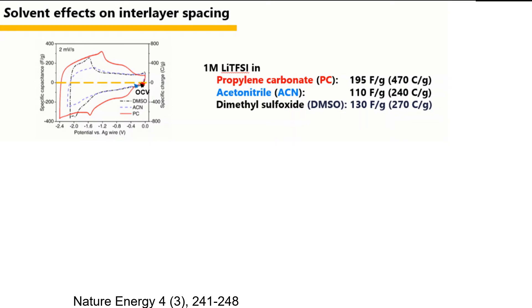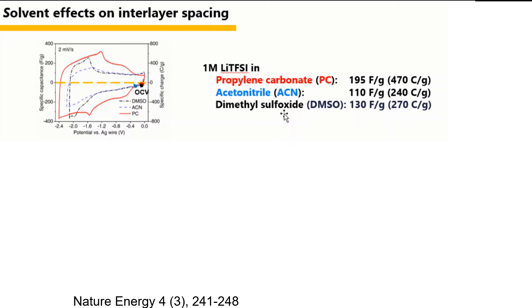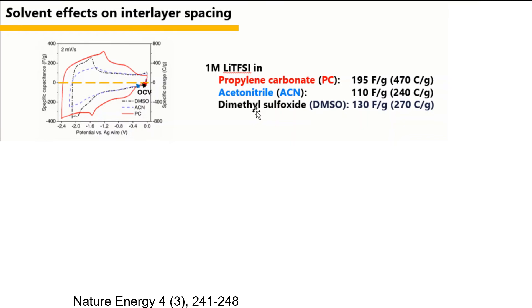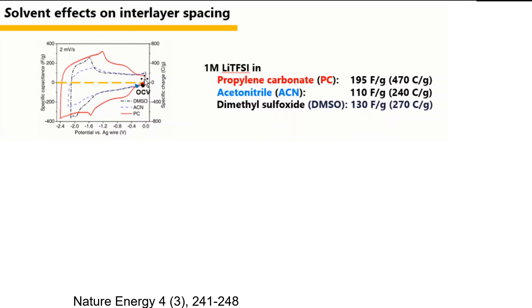In the bulk electrolyte, we know that if we have 1 molar LiTFSI in acetonitrile, we will have much higher ionic conductivity than DMSO and PC, and indeed acetonitrile is the most commonly used electrolyte in carbon supercapacitors. However, for 2D transition metal carbide MXene, unexpected results are observed. As shown by the blue line on the CV curve, the acetonitrile system shows no clear redox reactions and the lowest capacitance.